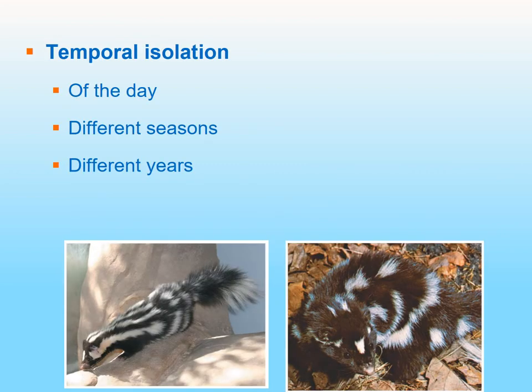Temporal isolation has to do with timing. It blocks the mating attempt due to different times at which mating occurs. It could be time of day or a different season — some organisms mate during spring, some during summer. A different mating time prevents them from mating. It could also be a different year, as organisms must reach reproductive maturity before they can produce offspring.